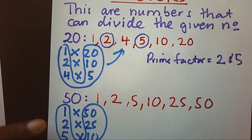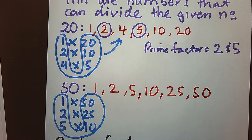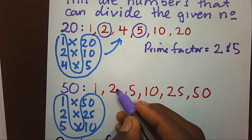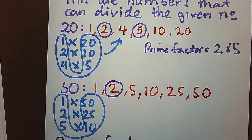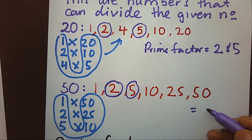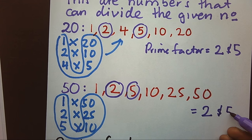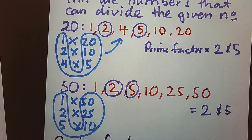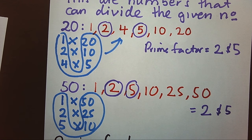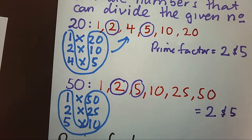Let's look at 50. The prime factors of 50 are 2 and 5 again. So for 50, we also have prime factors 2 and 5. Now let's find another way of how to obtain prime factors.